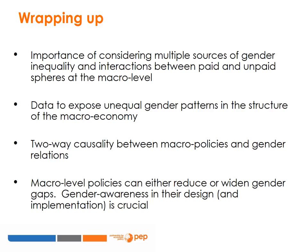This final slide summarises the main learning points in this module. We stressed the importance of considering multiple sources of gender inequalities at the macro level and taking into account both paid and unpaid sectors as constitutive elements of the macro economy. We reviewed a range of data that can be used to expose unequal gender patterns in an economy. We stressed the need to take a holistic approach to gender analysis and macro policy. We also explained both sides of the two-way causality between macro policies and gender relations. Finally, we showed how macro level policies can either reduce or widen gender gaps, and noted that a range of factors and preconditions — which both researchers and policymakers need to consider — will be explored in other modules of this course.